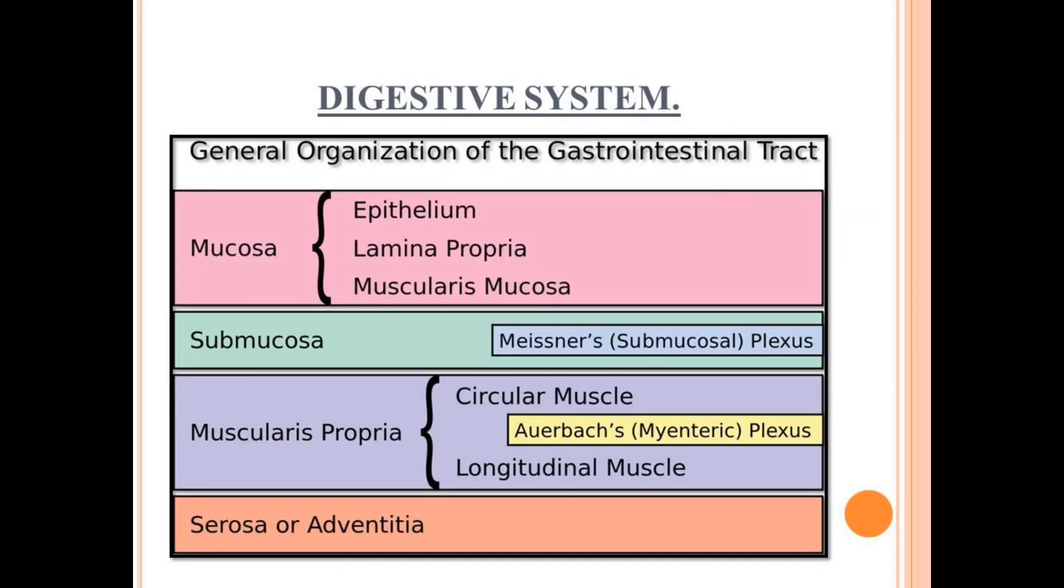Here I have shown you all the layers we have talked about in a concise way: first is mucosa, then submucosa, muscularis, and serosa or adventitia. Mucosa is the innermost layer, serosa or adventitia is the outermost layer.